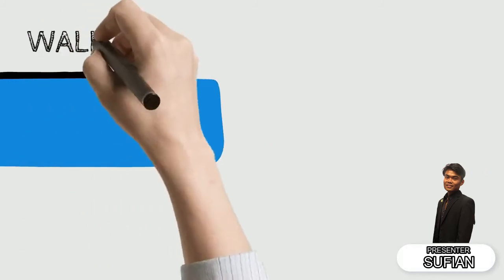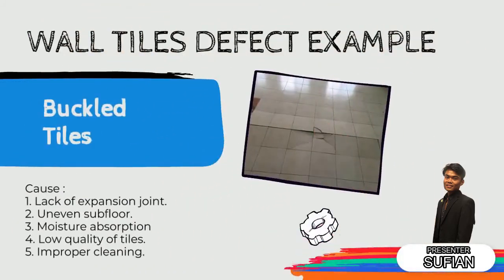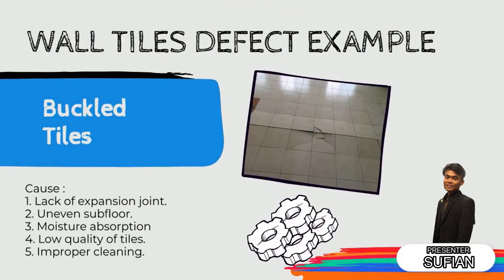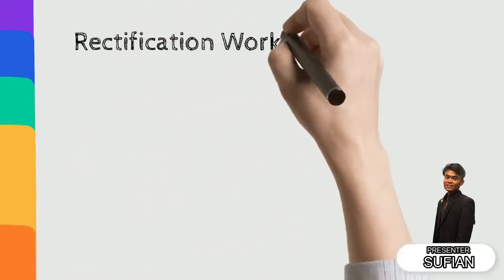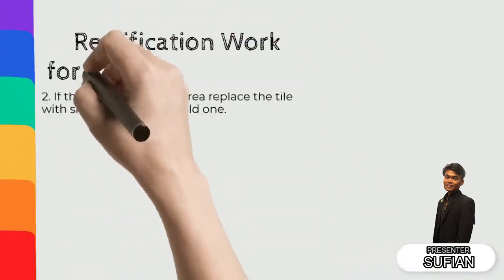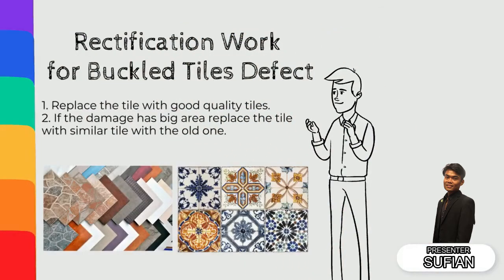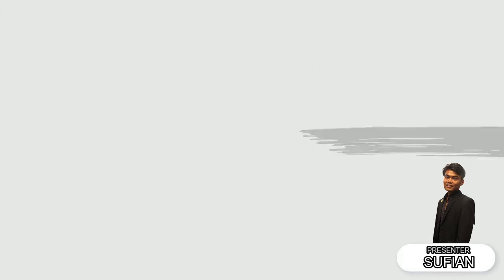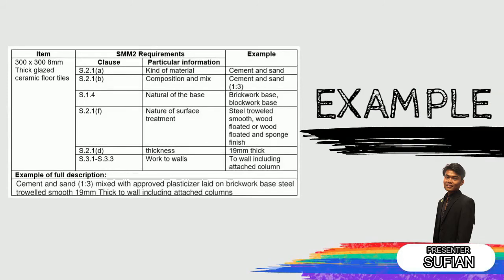Buckled tiles is an example of a wall tiles defect. The causes of buckled tiles are lack of expansion joints, uneven subfloor, moisture absorption, and low quality tiles. Rectification work for buckled tiles is to replace the tile with good quality tiles, or if the damaged area is large, replace the tiles with similar tiles to the original. This is an example of how to write a good BQ.